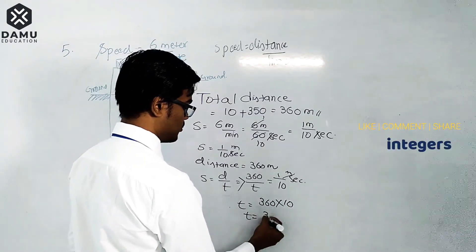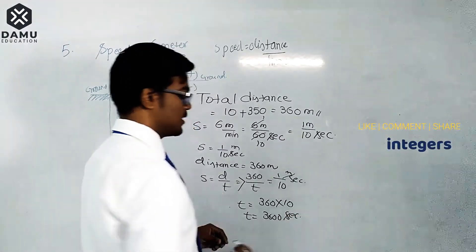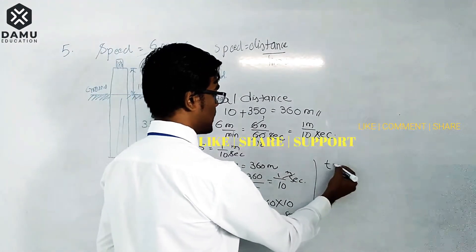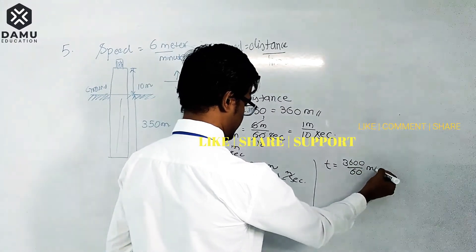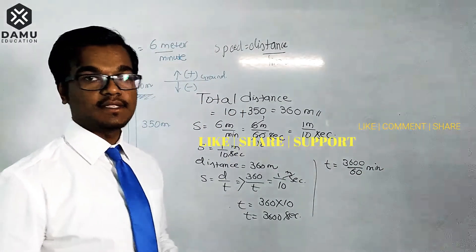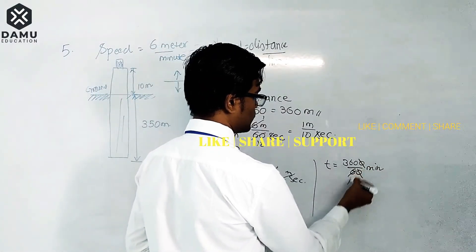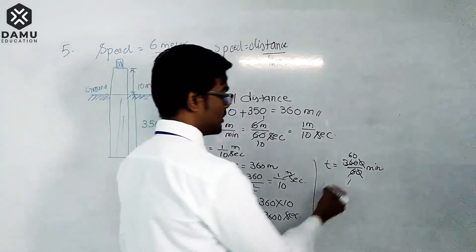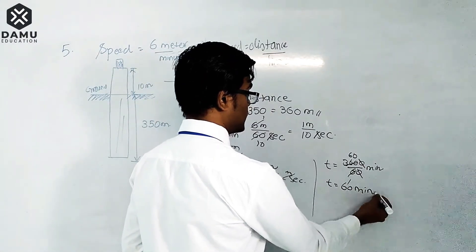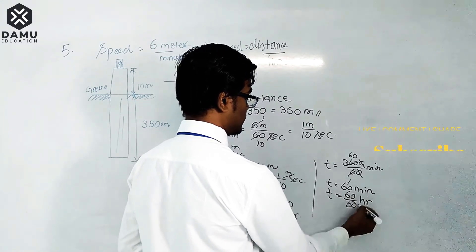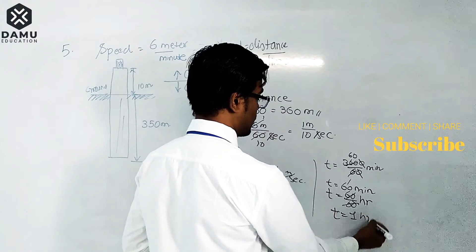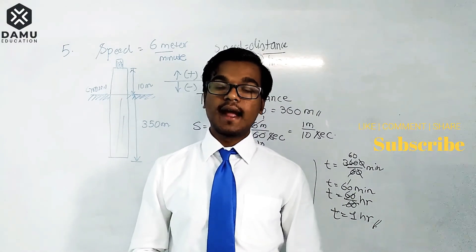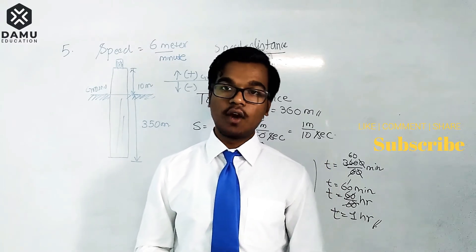Time equals 3600 seconds. Converting to minutes: 3600 divided by 60 equals 60 minutes. Converting to hours: 60 minutes divided by 60 equals 1 hour. So the elevator will take one hour to descend from 10 meters above the ground level to 350 meters below the ground level.